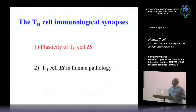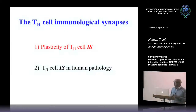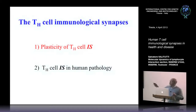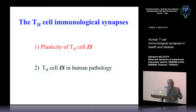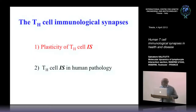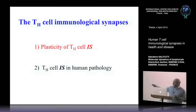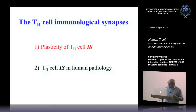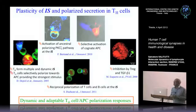I will divide my seminar in two parts. In the first part, I will speak about data on T-helper cell immunological synapses. In the second part, I will discuss data on cytotoxic T-cell immunological synapses. Concerning the T-helper cells, I will briefly report what we did about the plasticity of helper cell synapses, and then present new data on T-helper cell synapses in human pathologies.